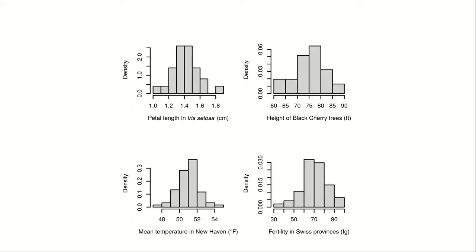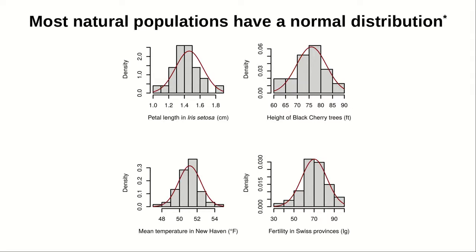Here I show you the histogram of a few natural variables, like the petal length in a flower, or the height of black cherries, or the mean temperature in New Haven or fertility in Swiss provinces. They all have something in common. They are distributed with a bell-shaped distribution, which is called the normal distribution.